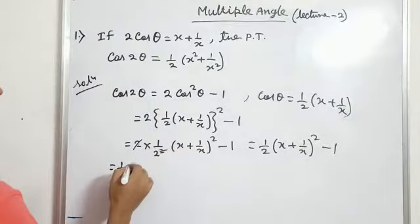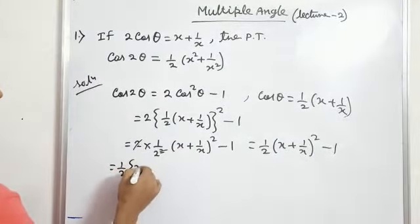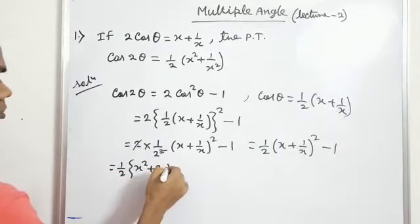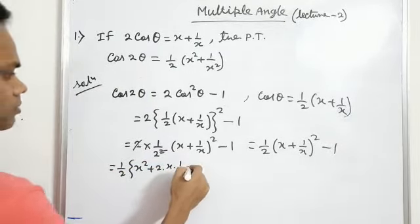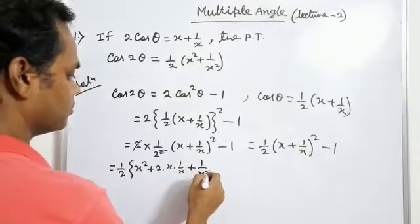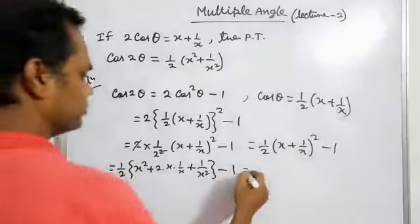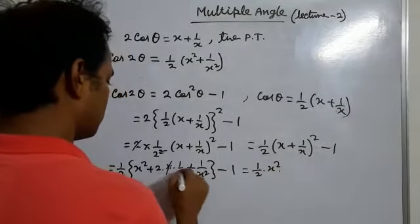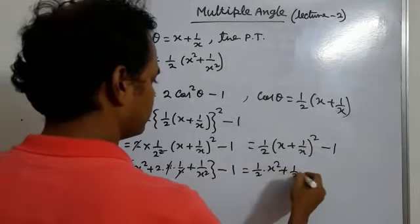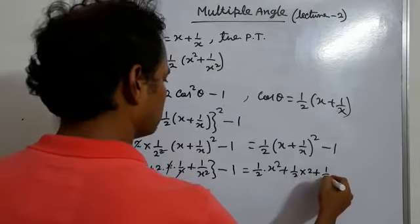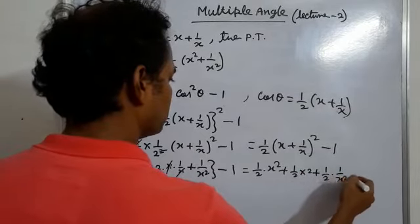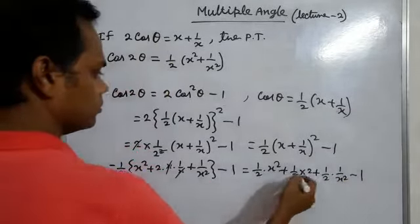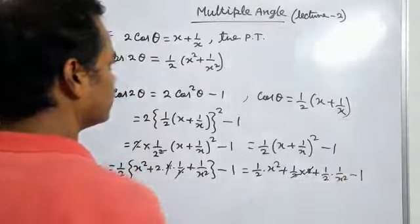By the formula a plus b whole square, we have x square plus 2 into x into 1 by x plus 1 by x square minus 1, equals half into x square plus half into 2 plus half into 1 by x square minus 1. One minus one equals zero.